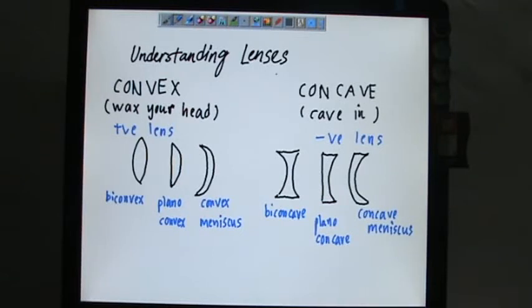Today we want to bring ourselves to the discussion of lenses. Basically there are two types of lens: convex lens and concave lens.